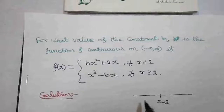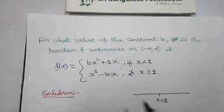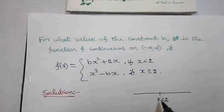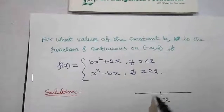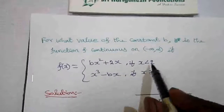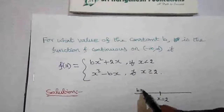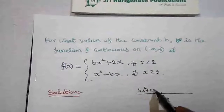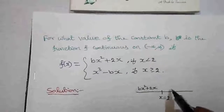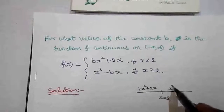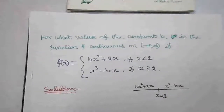For the left-hand side limit, we use the function at the left-hand side of x equals 2, which is bx squared plus 2x. For the right-hand side limit, we use x cubed minus bx.